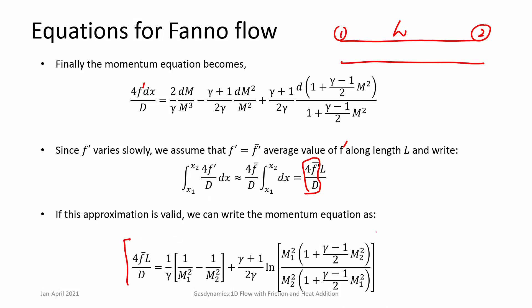This closed-form solution expresses the change in Mach number as the flow passes through a duct of length L with average friction coefficient f-bar, changing from M₁ at entry to M₂ at exit. While in principle you can solve for M₂ given M₁ and L, the equation is not straightforward to solve and iterative tools may be needed.